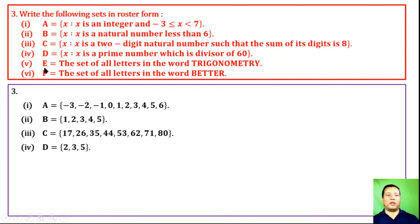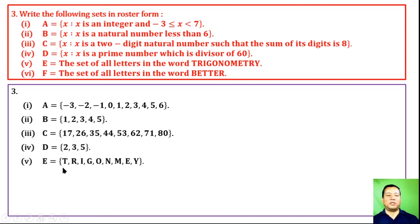E = the set of all letters in the word 'TRIGONOMETRY'. The distinct letters are: T, R, I, G, O, N, M, E, Y. So E = {T, R, I, G, O, N, M, E, Y}.